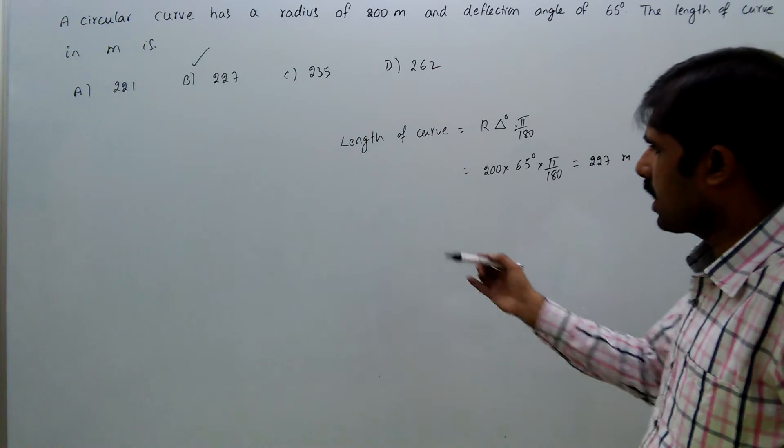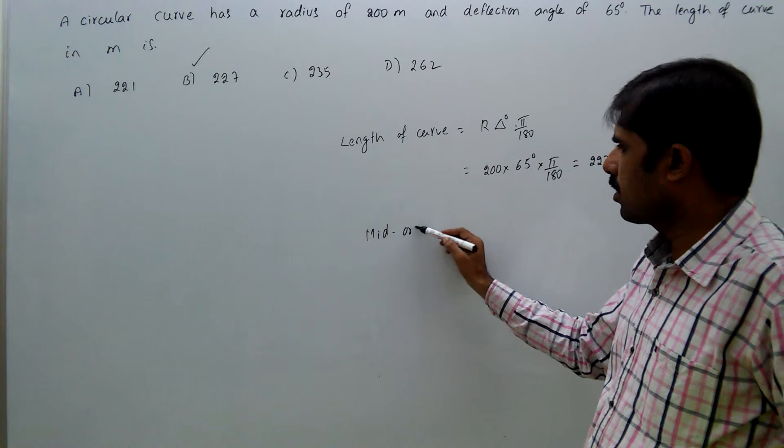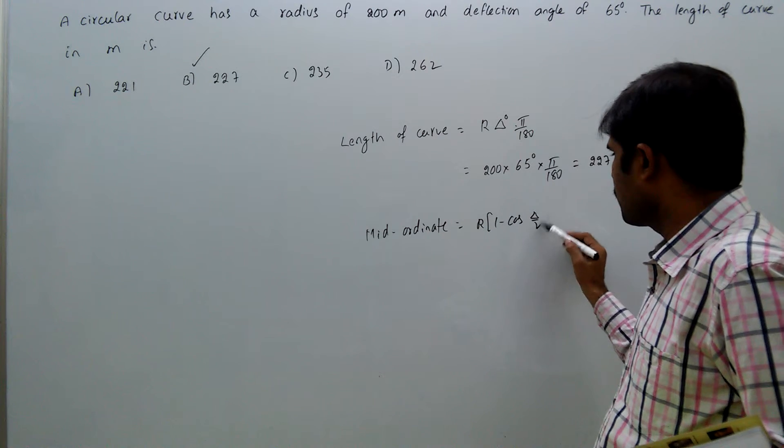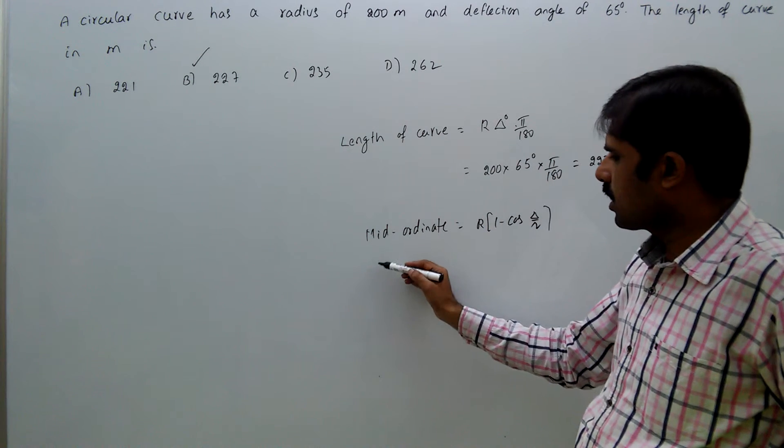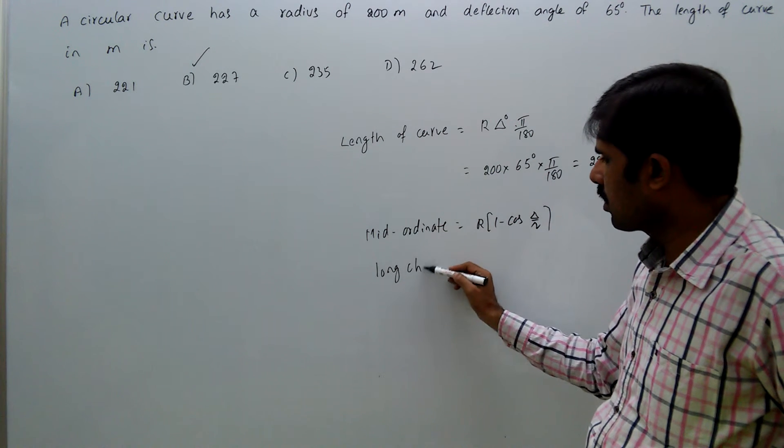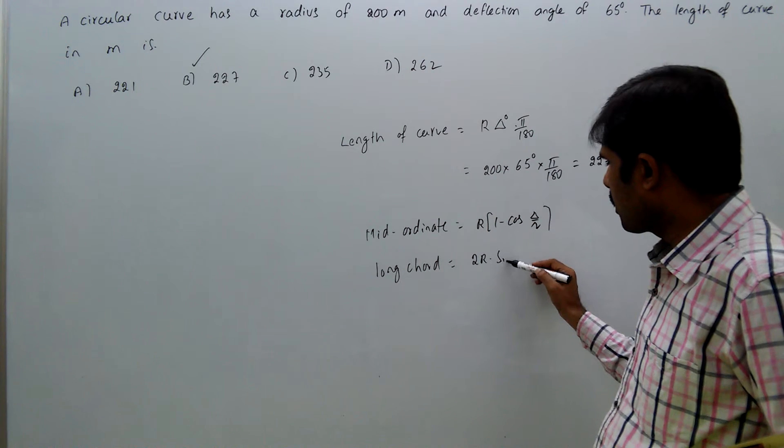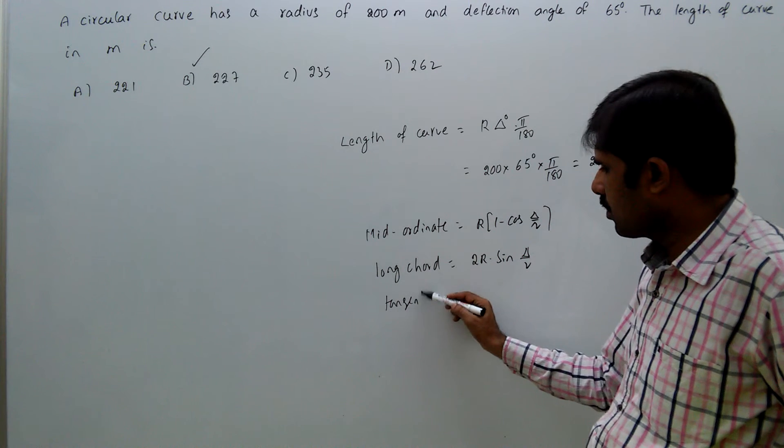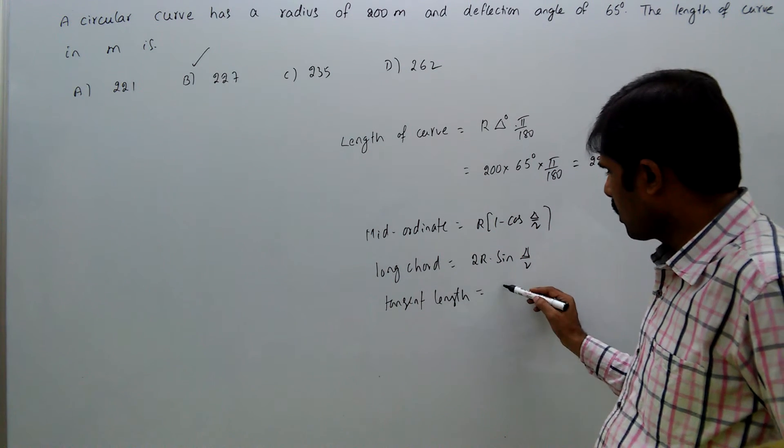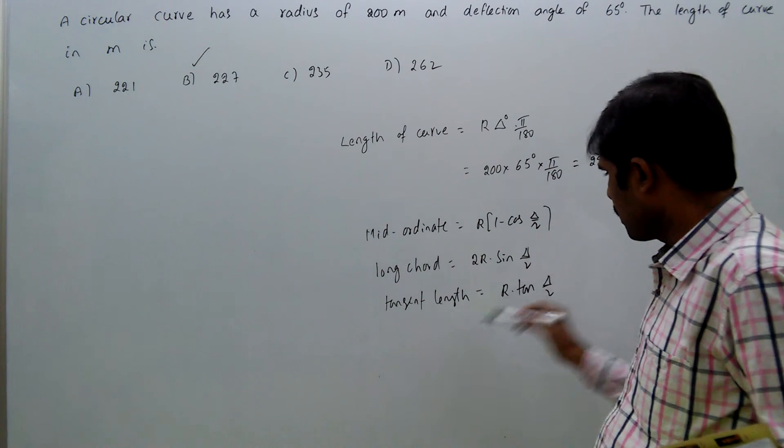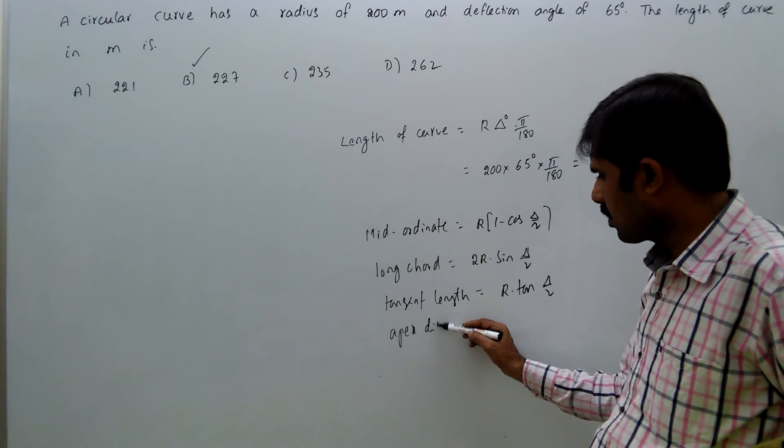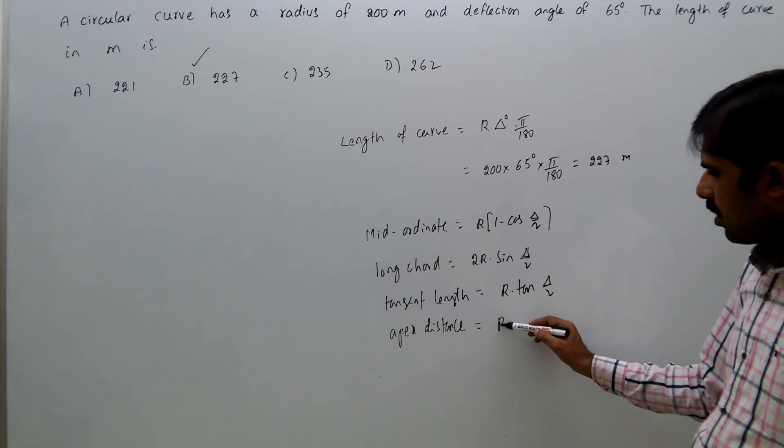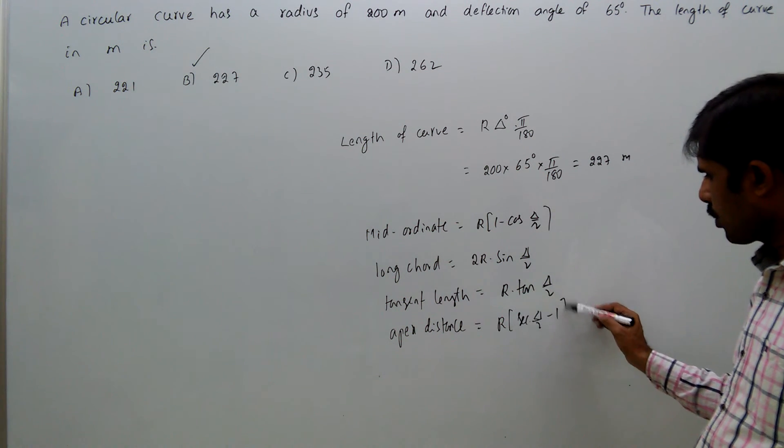Remaining formulas you should also remember always: mid ordinate equals r times 1 minus cos delta by 2, long chord length equals 2r sin delta by 2, tangent length equals r tan delta by 2, external distance equals r times tan delta by 2 minus 1.